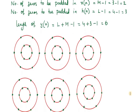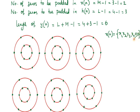The next step is to draw 6 concentric circles. Now, x(n) originally has 4 samples, but after padding two zeros, the samples in x(n) are x1, x2, x3, x4, 0, and 0.